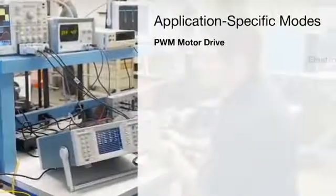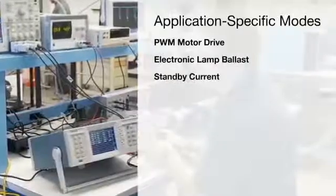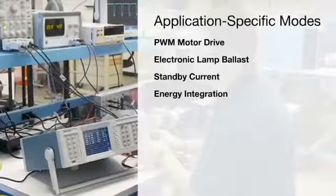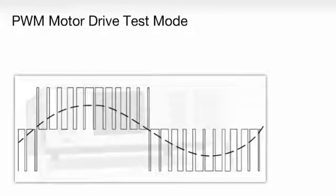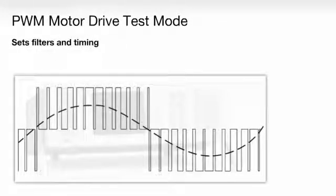Use the PA-4000's application-specific modes to automatically set filters, frequency references, and ranges for tricky modulated or wide-range signals. For example, configuring a power analyzer to measure highly modulated PWM waveforms can be frustrating. You get quick results by letting the PA-4000 take care of filter settings and timing.